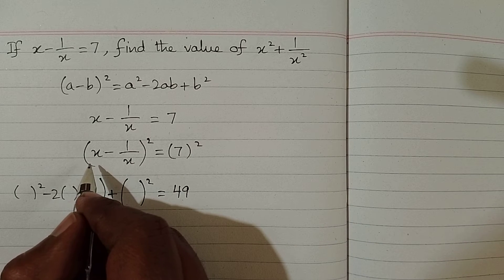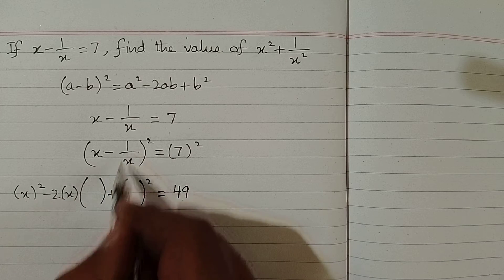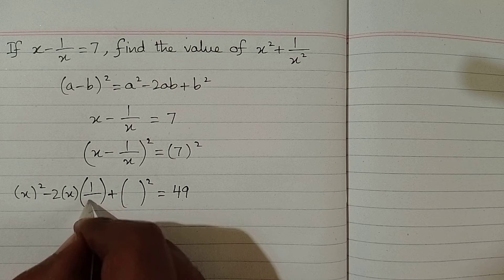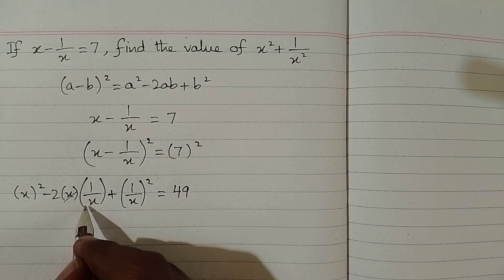Now we can put x in place of a and in place of b we can put 1 upon x. Now we can cancel this x and this x.